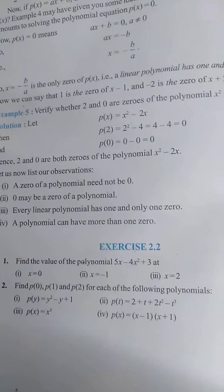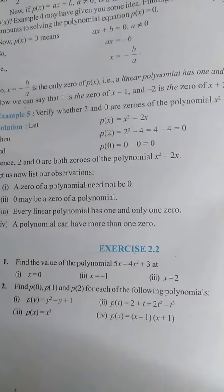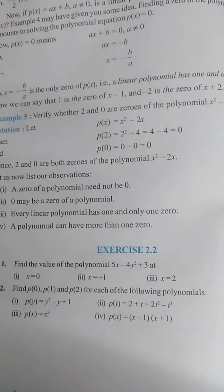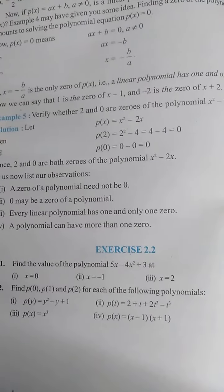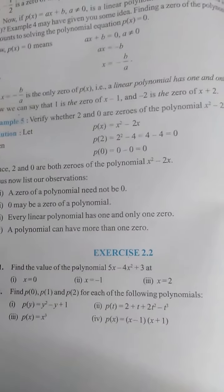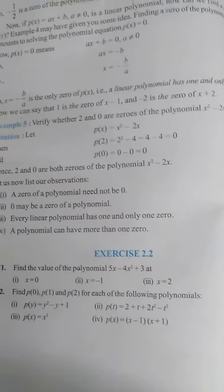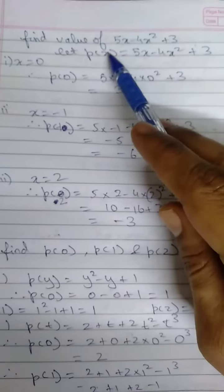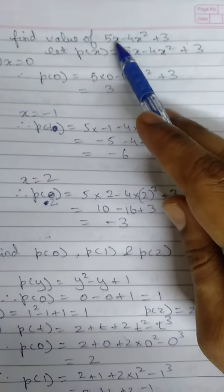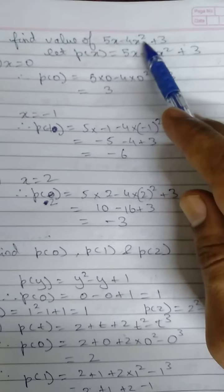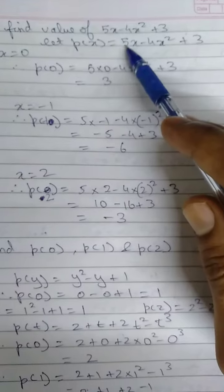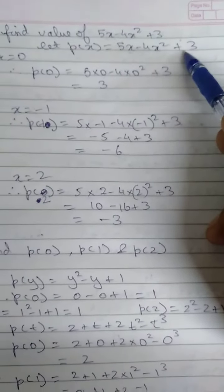Hello students, we will be solving from the chapter polynomials, second exercise, Exercise 2.2. First question: find the value of polynomial 5x minus 4x square plus 3 at x equals 0, minus 1, and x equals 2. So first we need to find the value of this polynomial at different values of x. Let us assume this polynomial is p(x), so p(x) = 5x - 4x² + 3.